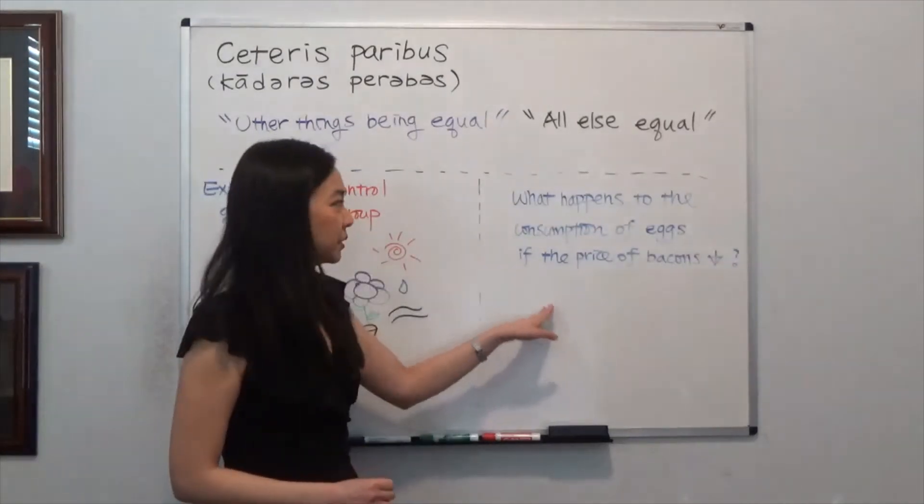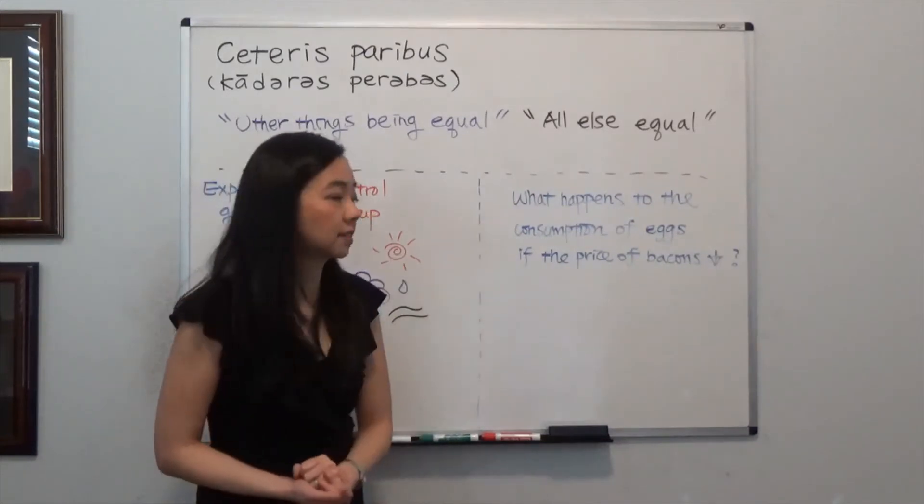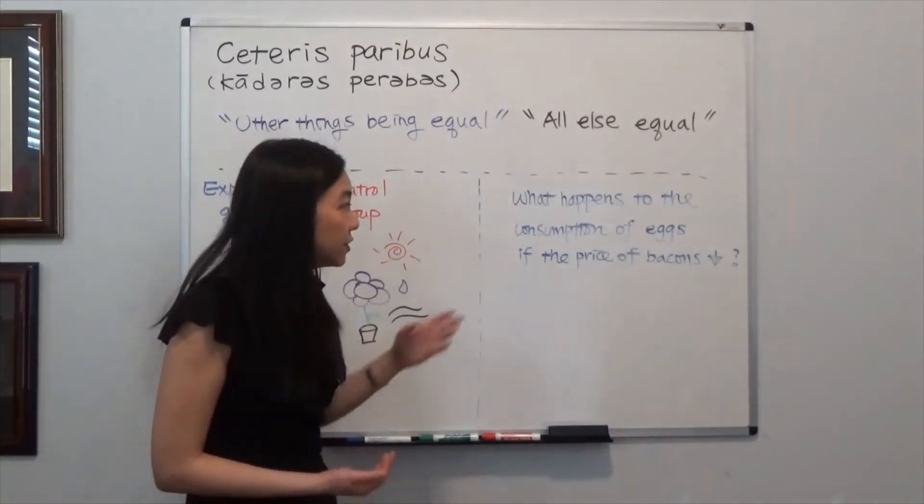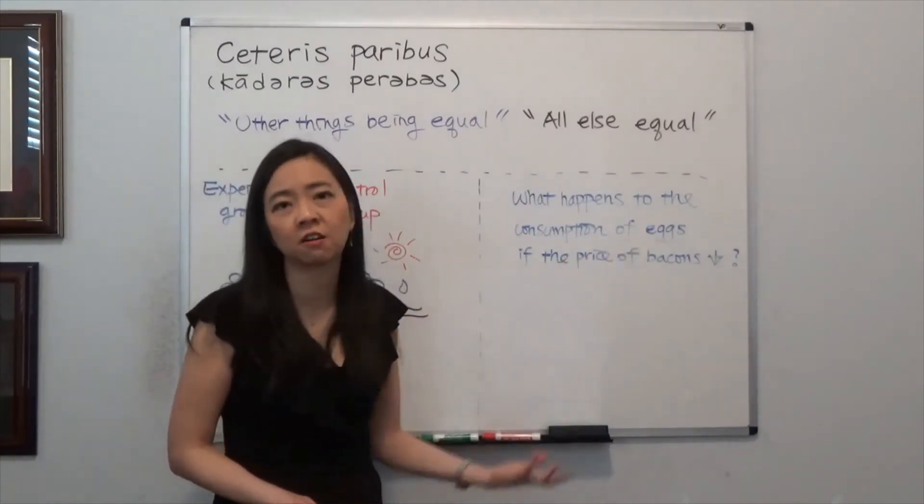Now go back to our economics. Suppose you're doing a research and you want to see what happens to the consumption of eggs if the price of bacon goes down. And we know that bacon and eggs, they are complements.